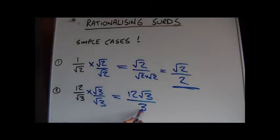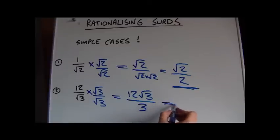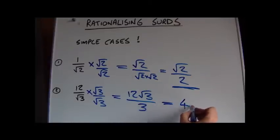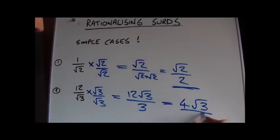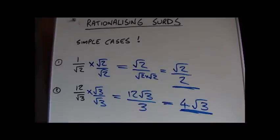Root 9 equals 3, so we have 12 root 3 over 3. We can simplify: 12 over 3 equals 4, so the final answer is 4 root 3. It's no longer a fraction with a surd on the bottom, but it's still rationalized.